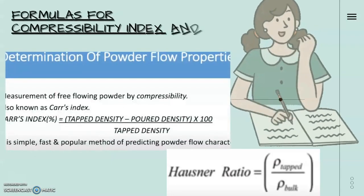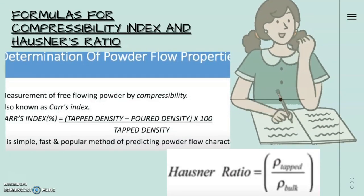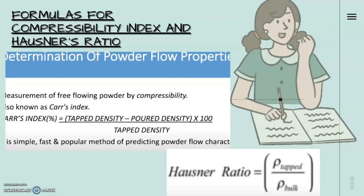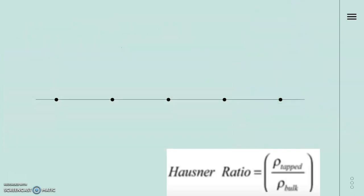Formulas for compressibility index and Hausner's ratio: measurement of free flowing powder by compressibility is also known as Carr's index. Carr's index equals tap density minus bulk density divided by tap density times 100. This method is simple, fast and popular method of predicting powder flow character. The formula for Hausner's ratio is tap density by bulk density.